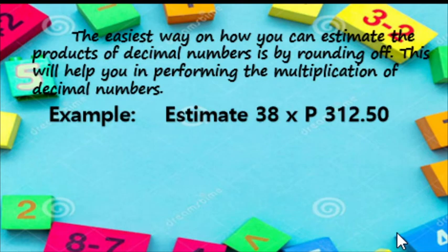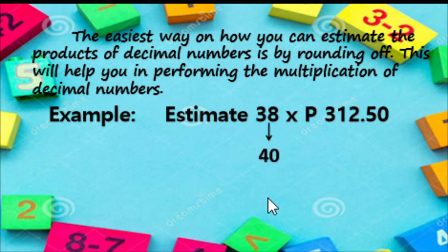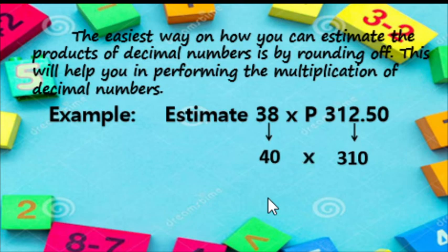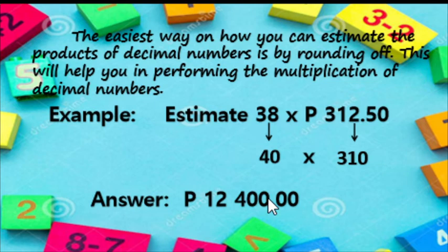The easiest way to estimate the product of decimal numbers is by rounding off. This will help you in performing the multiplication of decimal numbers. Let us estimate 38 times P312.50. First, we round off to the nearest whole number: 38 becomes 40, and P312.50 becomes P310. Then we multiply: 40 times P310, the answer is P12,400.